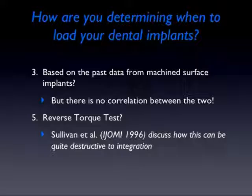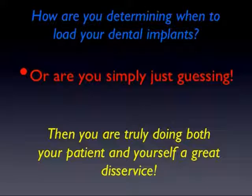How about based on past data? A lot of our past data is machine surface data and there's no correlation between our roughened surface, enhanced surface implants of today, and past machine surfaces. Last but not least — the reverse torque, that dreaded test. How many of you are willing to risk failing an implant to prove that it may succeed? I think it's utterly daffy to put an implant through a test that has very little correlation to occlusion. If you're not making objective decisions through data, you're truly doing your patient and yourself a disservice.